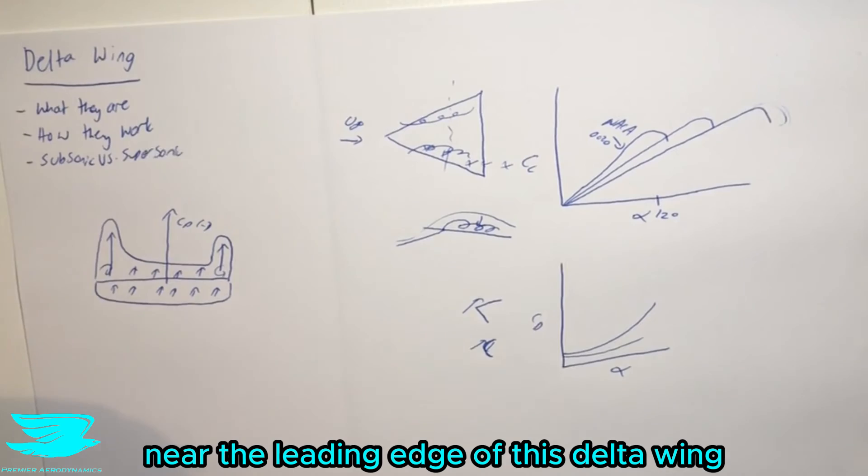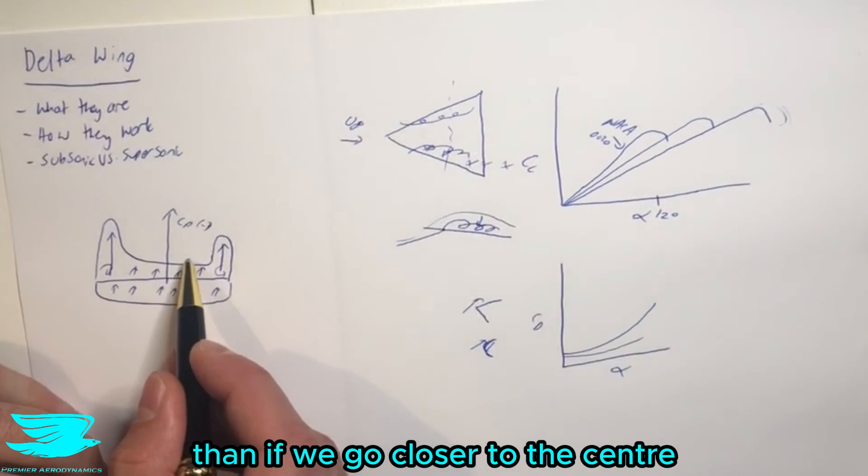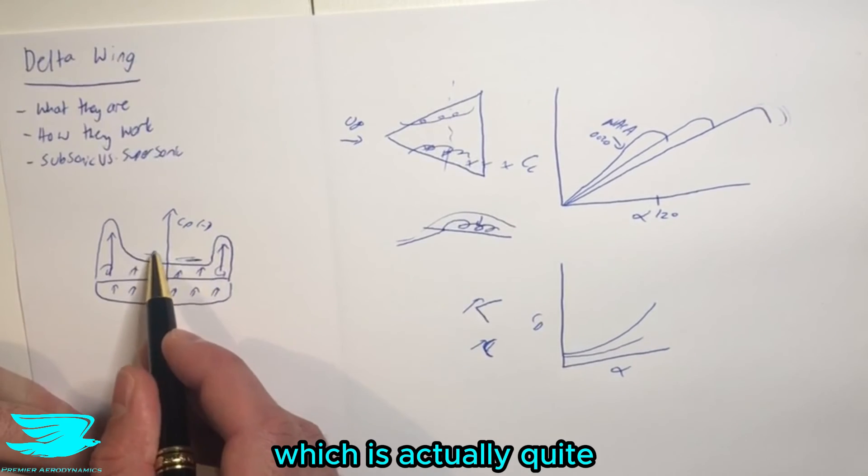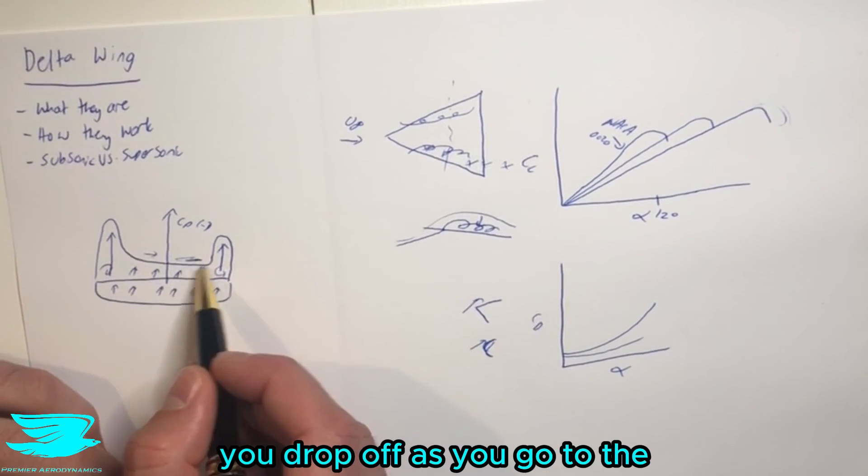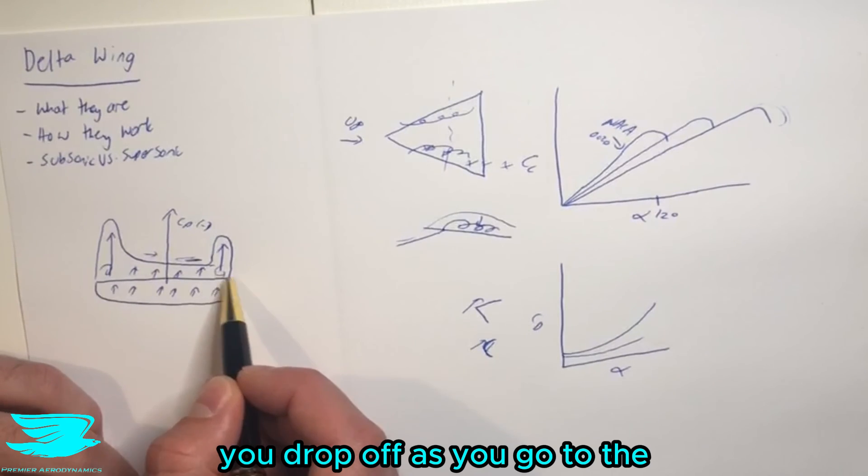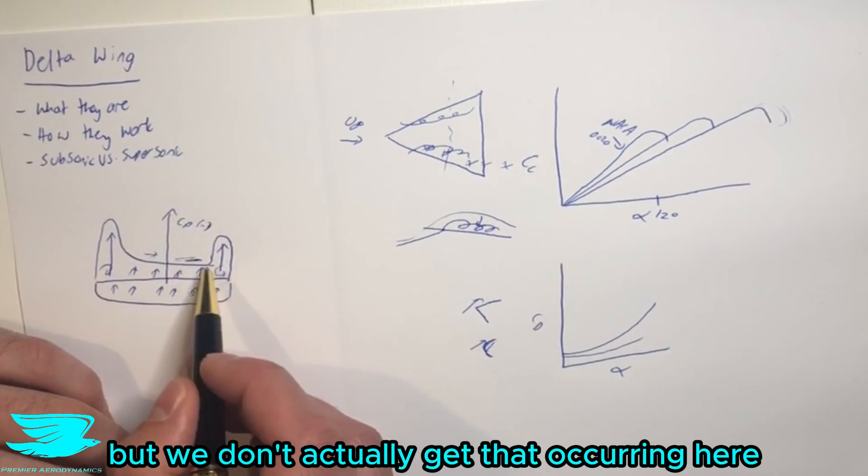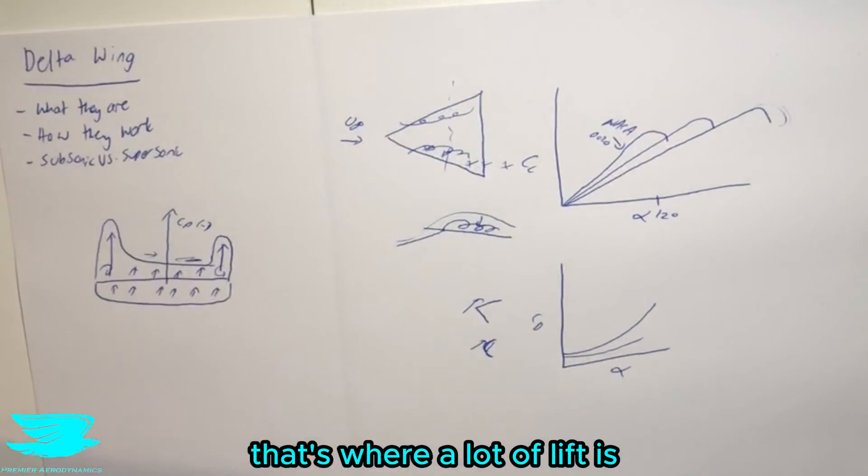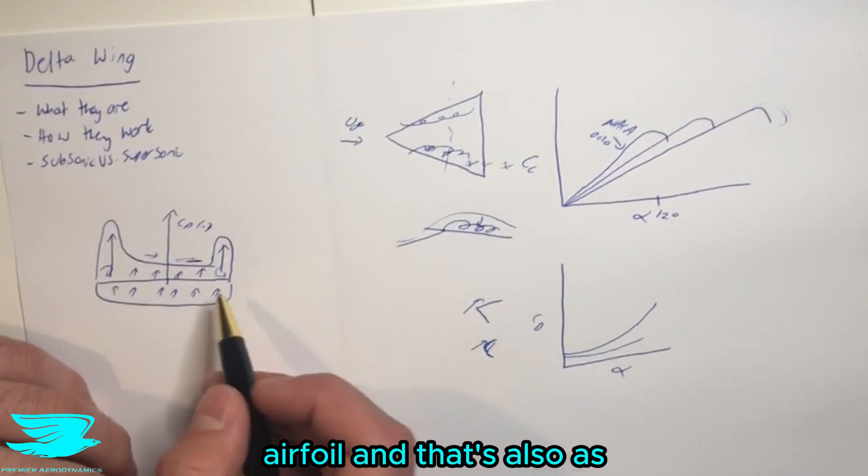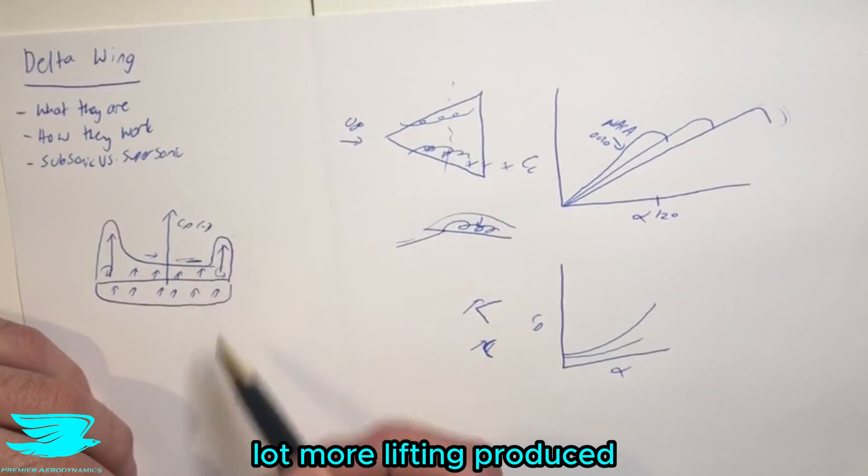And that literally means over these vortices, near the leading edge of this delta wing, we are producing a lot more lift than if we go closer to the center, which is actually quite different to most other wings. Usually it's the other way around. Most other wings, you drop off as you go to the sides of the airfoil in lift, but we don't actually get that occurring here. So we can see that the edge is actually producing a lot more lift. That's where a lot of lift is coming from for this airfoil. And that's also as we go to high angle of attack, where we're getting a lot more lift being produced.